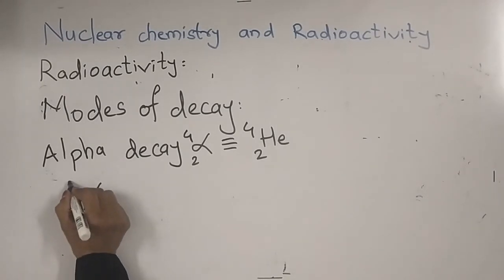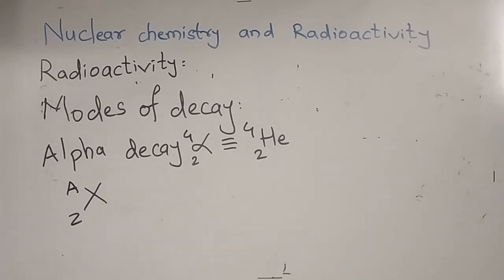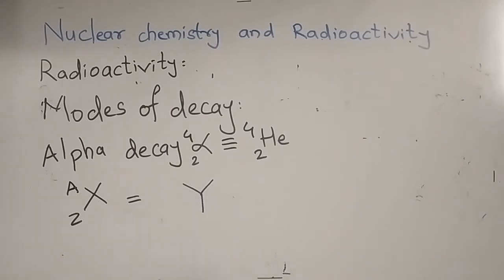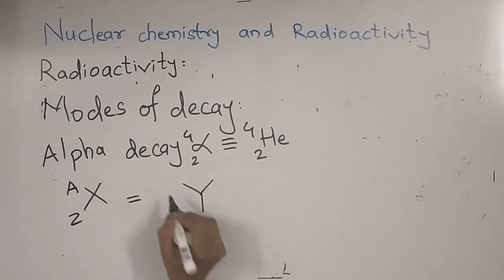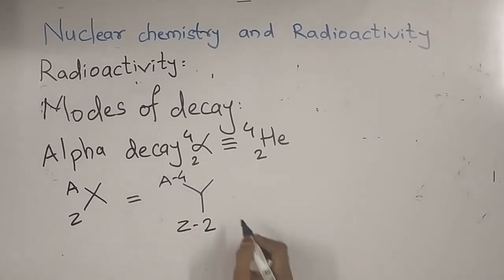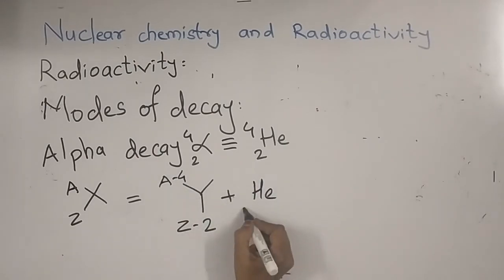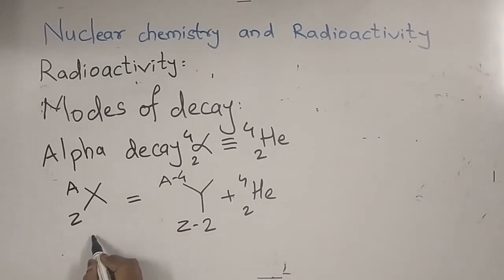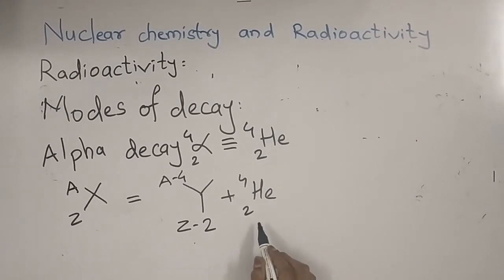When a radioactive element emits one alpha particle, a new nucleus is formed. In general representation: the atomic number decreases by 2 units and the mass number decreases by 4 units. The emitted particle can be written as ₂⁴He or ₂⁴α — both are correct. The original nucleus is called the parent nucleus, and the newly formed one is the daughter nucleus.